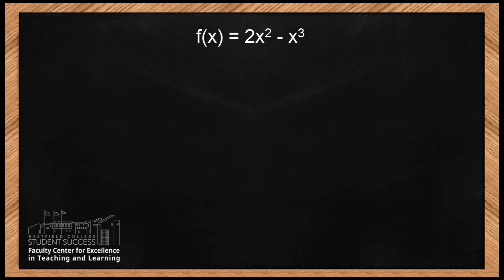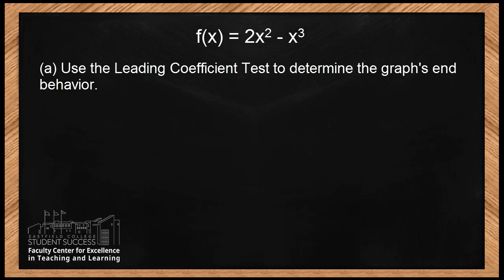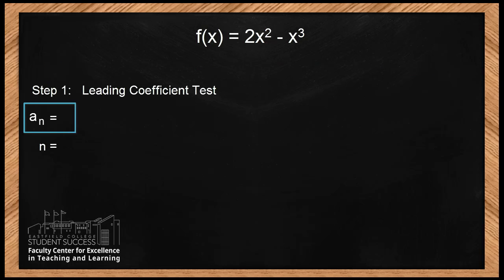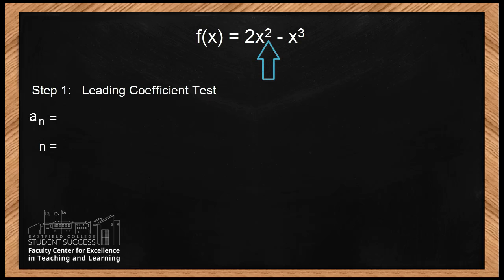Notice that we do have a polynomial function. For Part A, we use the leading coefficient test, which involves two parameters: the leading coefficient itself, and the highest exponent of the function. Notice how our function is written where the first term actually has a smaller exponent. Find the term with the highest exponent — in our case, the second term. That term has n = 3 and the leading coefficient aₙ = -1.